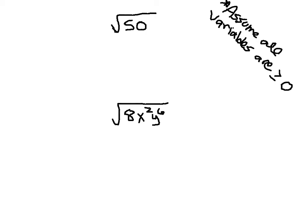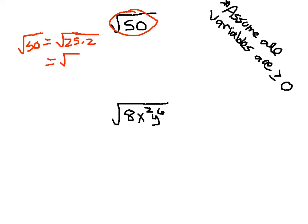The first example is the square root of 50. The square root of 50 — it's not a perfect square; 50 cannot be written as something squared. But what we can do, using what's called the multiplication property of radicals, is write 50 as 25 times 2. So underneath, let's write 50 as 25 times 2. The property we're allowed to use lets us write this as the square root of 25 times the square root of 2.